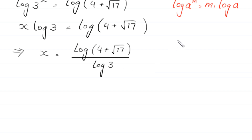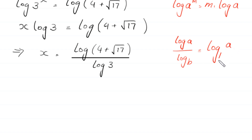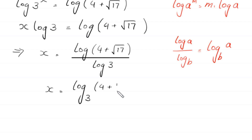By using the log property log a divided by log b is equal to log base b of a, this value becomes x equals log base 3 of 4 plus square root of 17. This is the final value of x and the final answer of this equation.